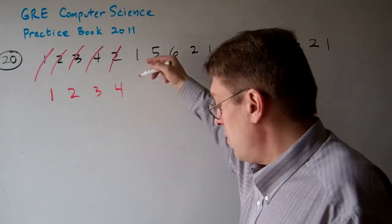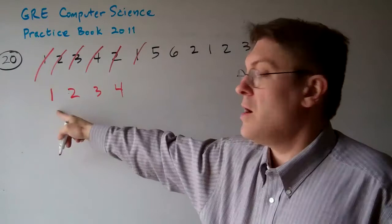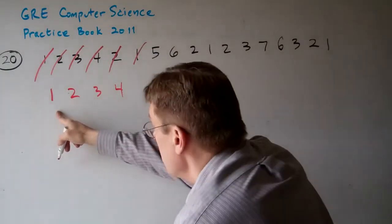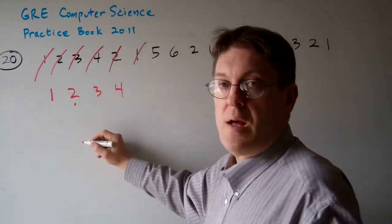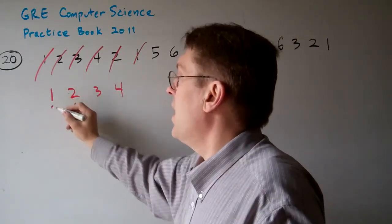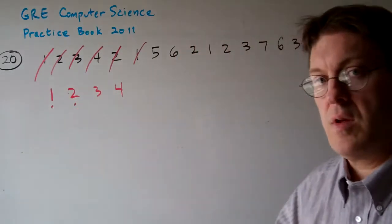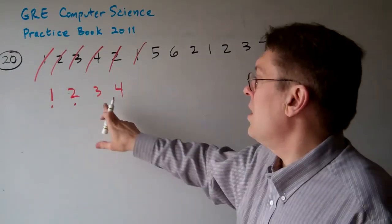What about one? No problem, because one's already here. Now we're going to use the least recently used, so two got updated because it was used, and one got updated because it was used. So now the oldest one is three.